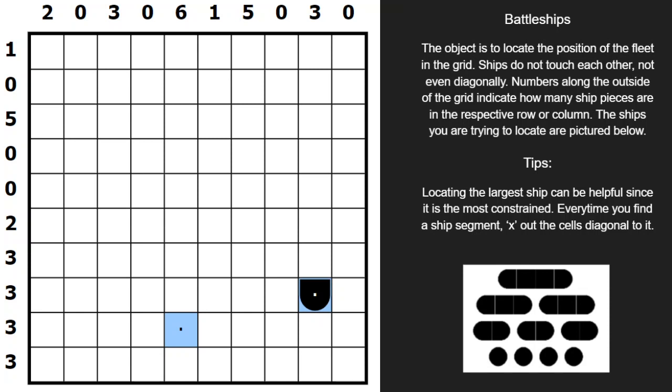How it works is you're going to be trying to find the fleet of ships in the ocean, much like the board game. The difference here from the board game, however, is the ships cannot be adjacent to one another, not even diagonally, and there's numbered clues along the outside. The numbers represent how many ship segments are in that given row or column, and that's it for the rules.